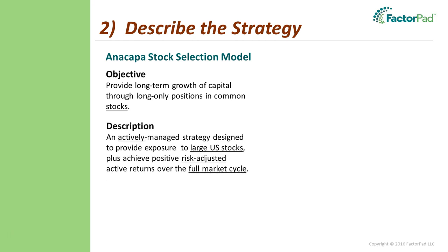Start with the objective, which here is to provide long-term growth of capital through long-only positions in common stocks. This allows the reader to zero in on where you compete. We also know stocks are variable investments, so periodic losses of principal can be expected. The description for Anacapa says: an actively managed strategy designed to provide exposure to large U.S. stocks plus achieve positive risk-adjusted active returns over the full market cycle. The key points: active versus passive, large U.S. stocks, and risk-adjusted — because that's required for institutions. Full market cycle implies a timeframe of three to five years, suggesting low turnover.